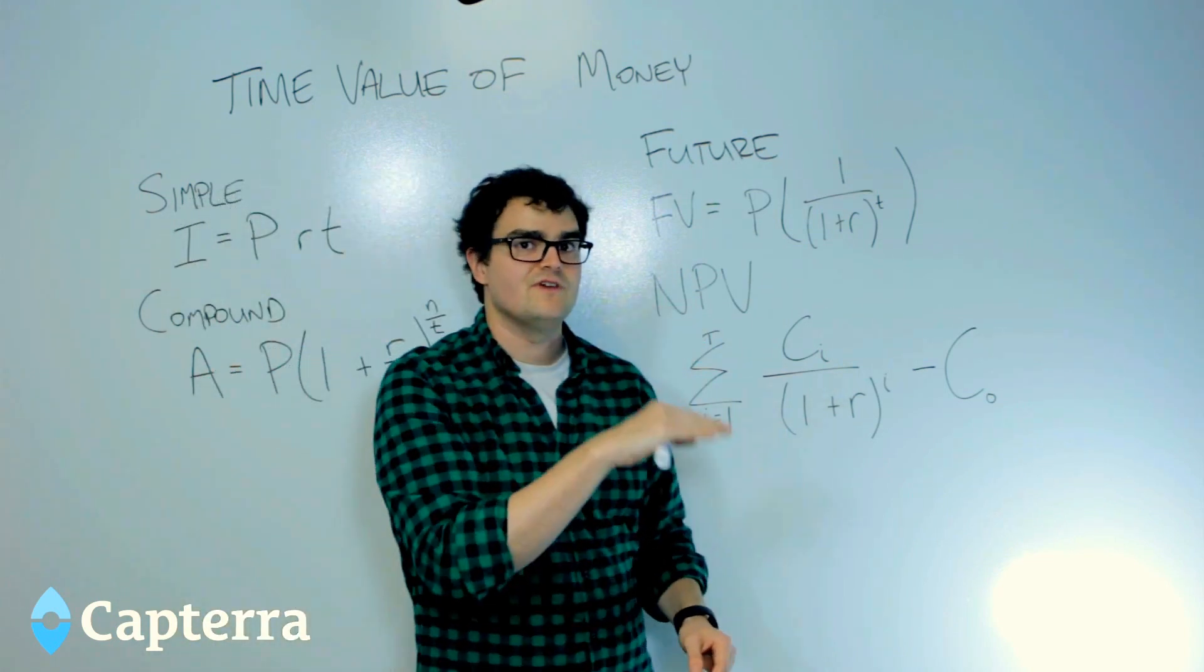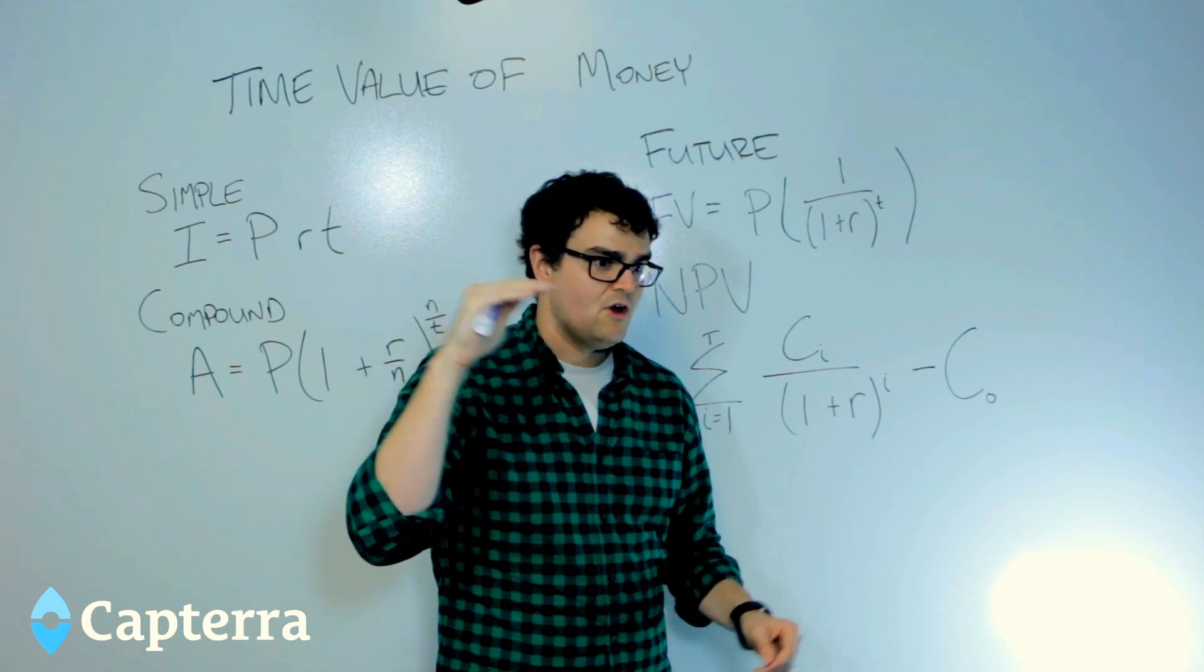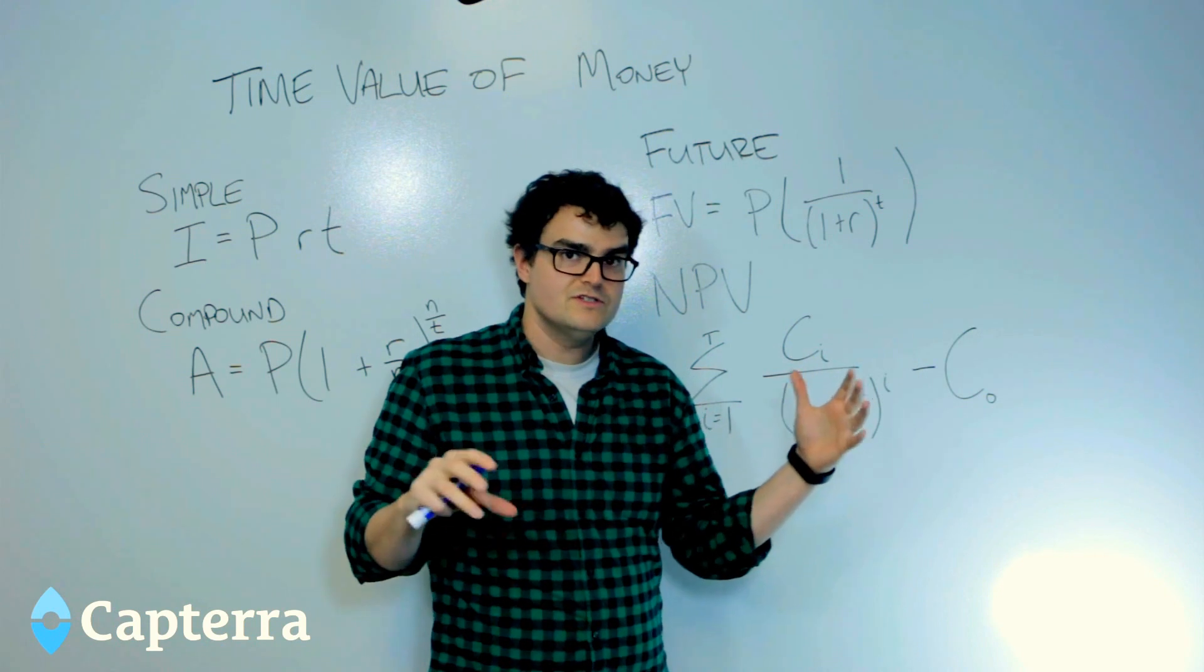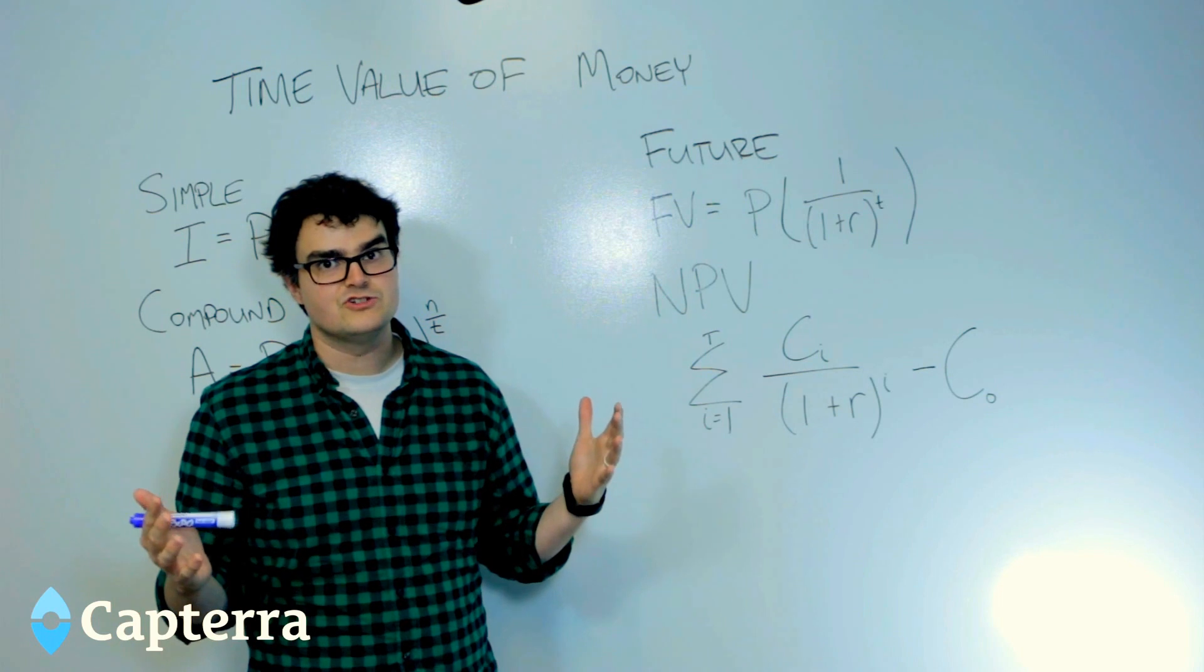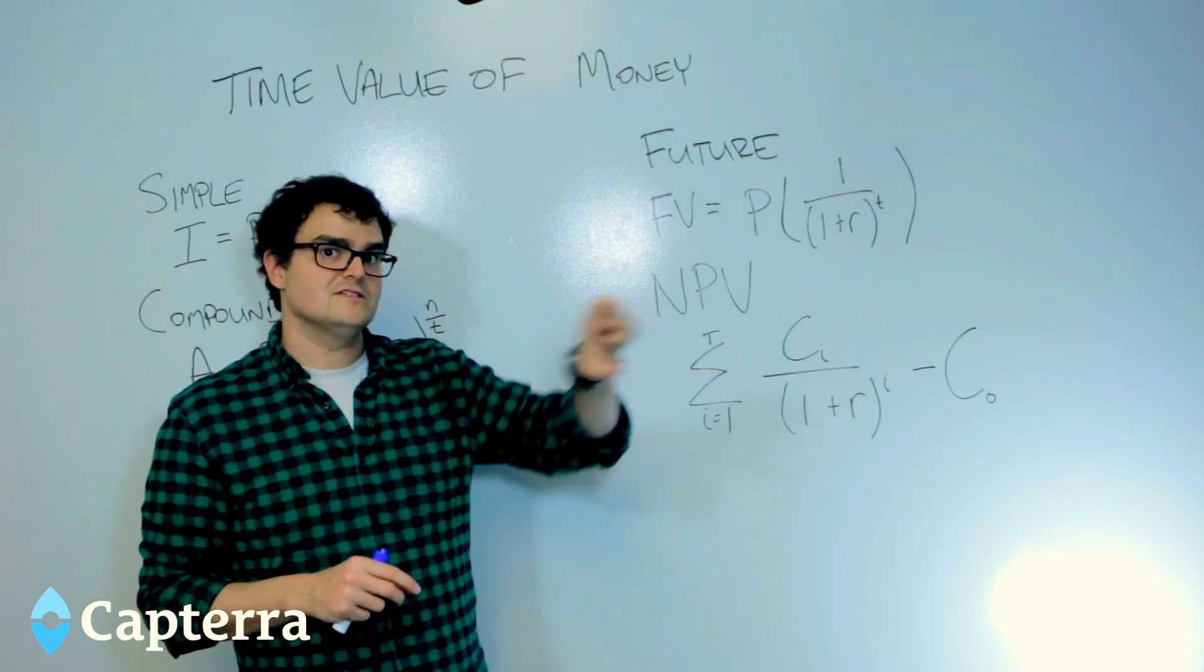And the other thing that goes into the time value of money, and the reason that money tends to decrease in value over time, is that there's the overall change in the cost of goods. So if you look at something like the consumer price index or any of the other indexes that track inflation, you see that over the course of time, my $100 buys less and less.